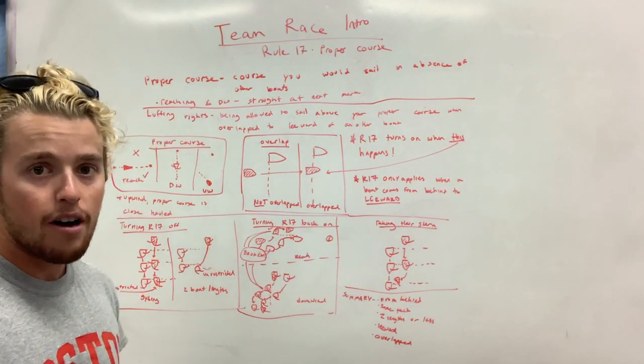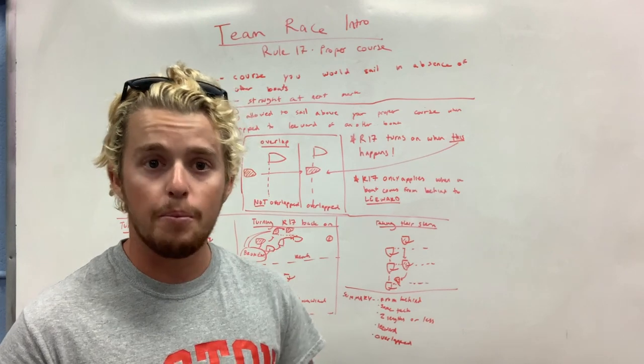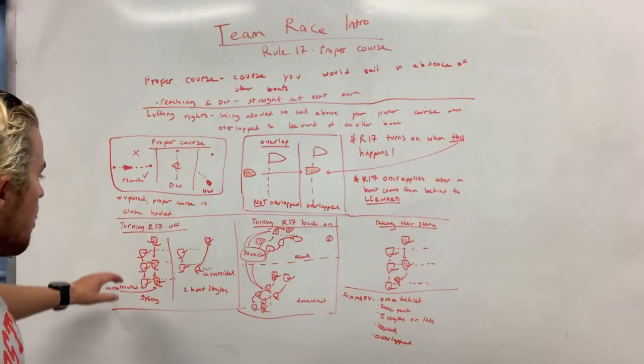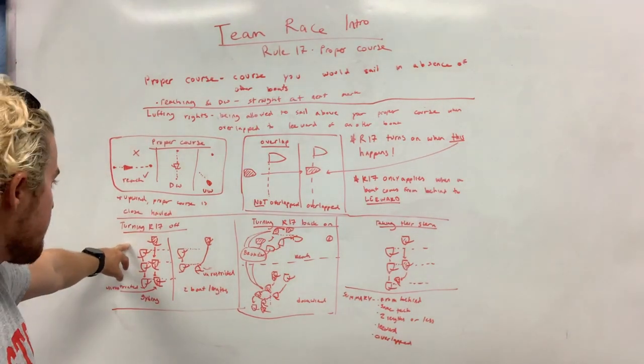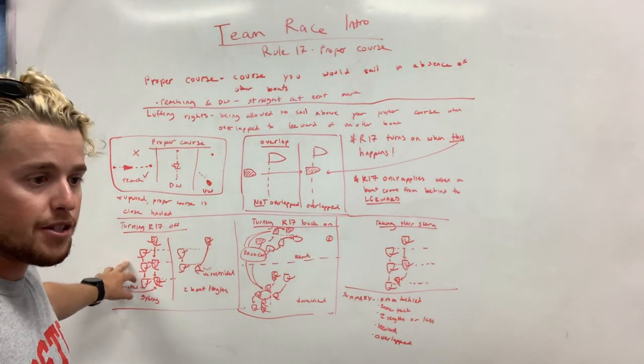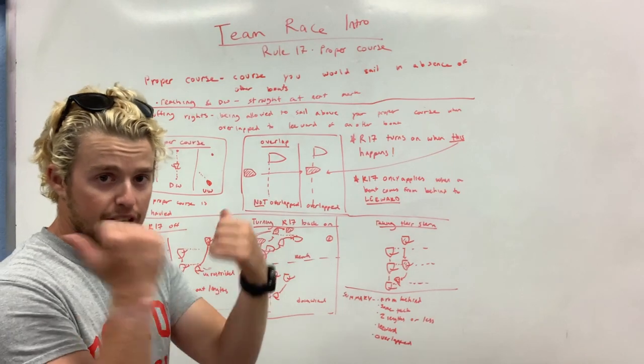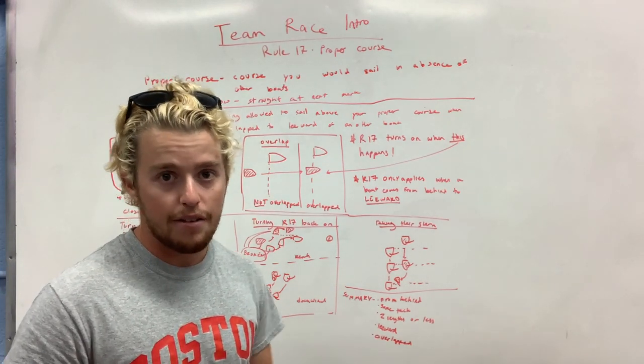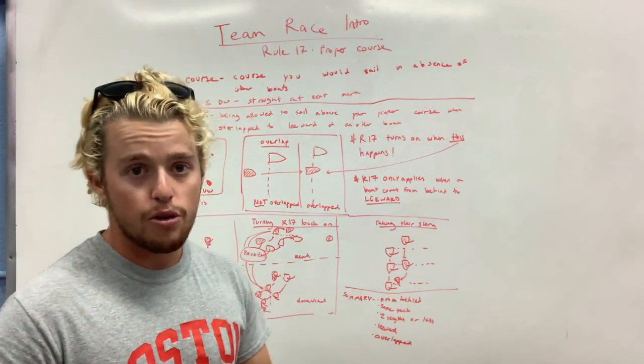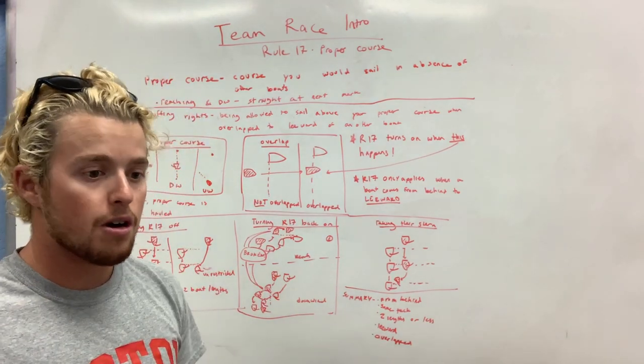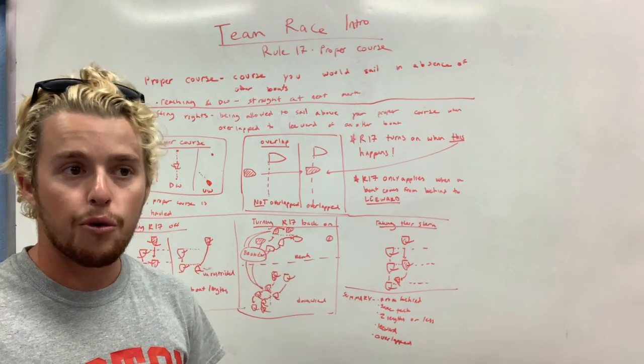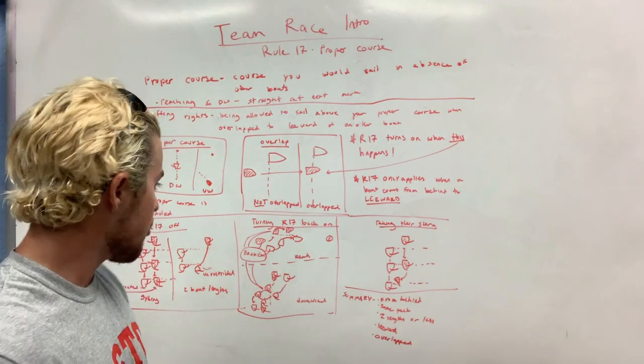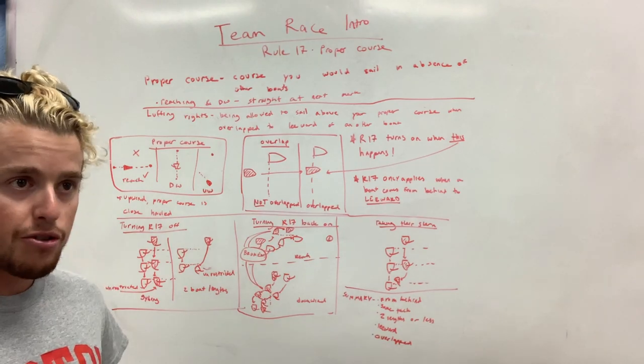So how do we turn Rule 17 off? I want to get my luffing rights back. If I'm trying to slow someone down and help my teammate, I need to be able to head them up. So how do we do that? First of all, you can do it by gybing. If you come from behind and you're on opposite gybe, your booms are pointing toward each other, you're sailing away from each other, you come from behind, hit the overlap, and then you gybe into it. Well, you are not restricted. You have luffing rights. You can sail them up as high as you want. Let's say you come from behind on the same gybe, so you're both on starboard. If you were just to throw your boom back and forth, double gybe, then you regain your luffing rights. And this is a move you'll see happen a lot in really high-level team racing. So gybe into the overlap means you're good, you're not restricted, you have luffing rights.